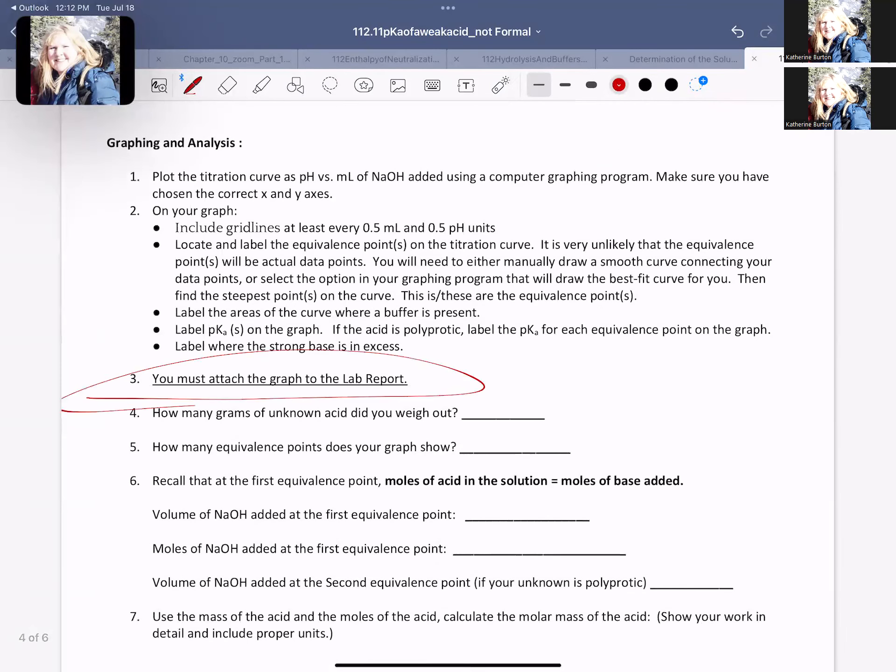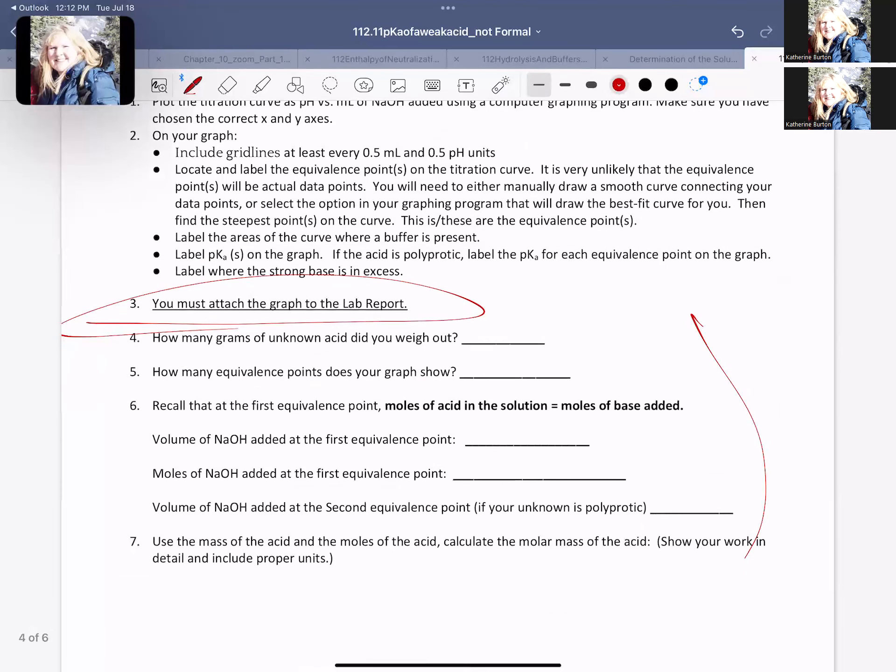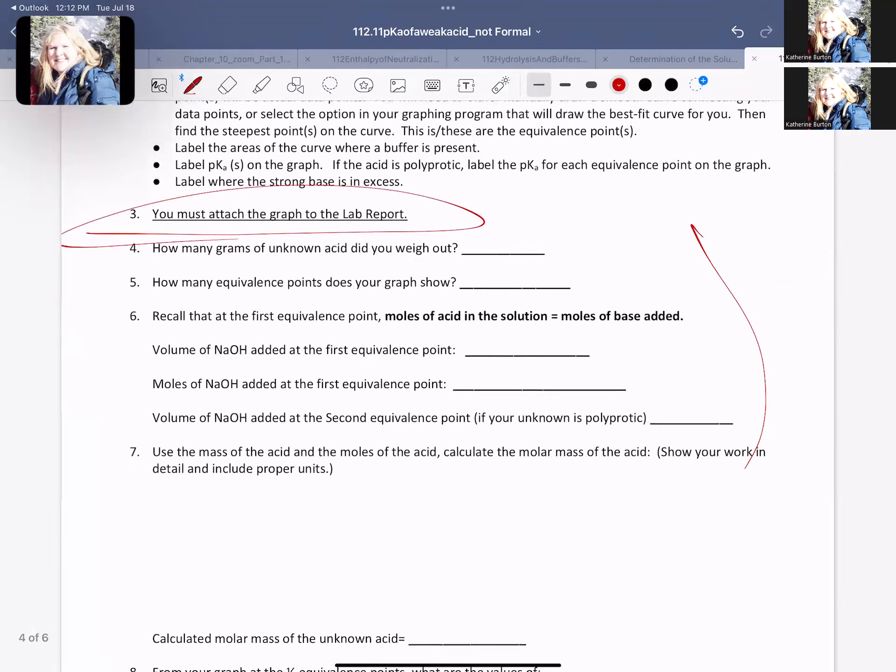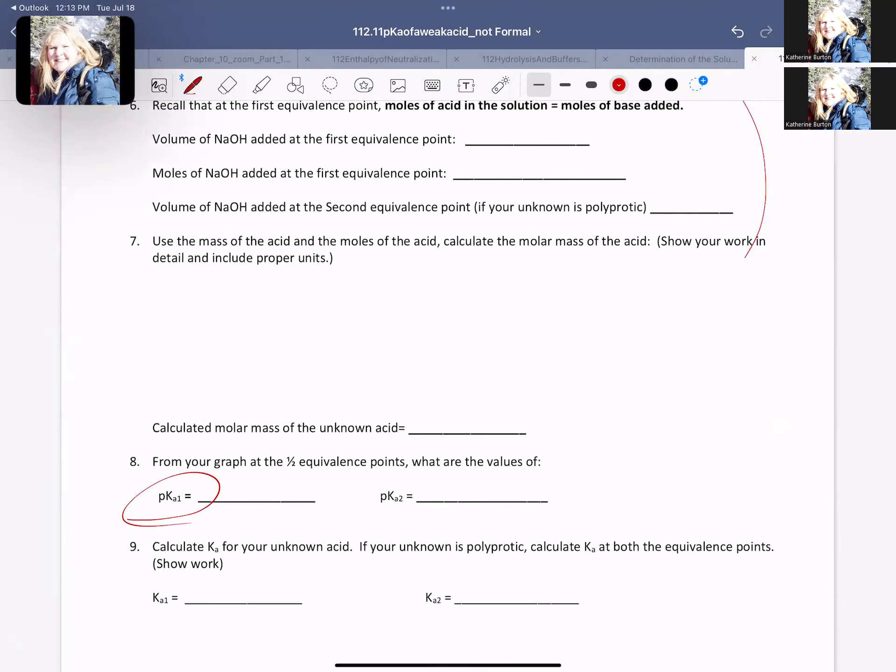Make sure you attach your graph, and you answer these questions. If you are doing this as a standard lab report, if it is a formal lab report, then you're going to have a different set of instructions as you go through. Make sure you explain at the end by comparing your pKa's and your molar masses, which of the acids you have, your possible sources of error, and why you think it is that particular acid.